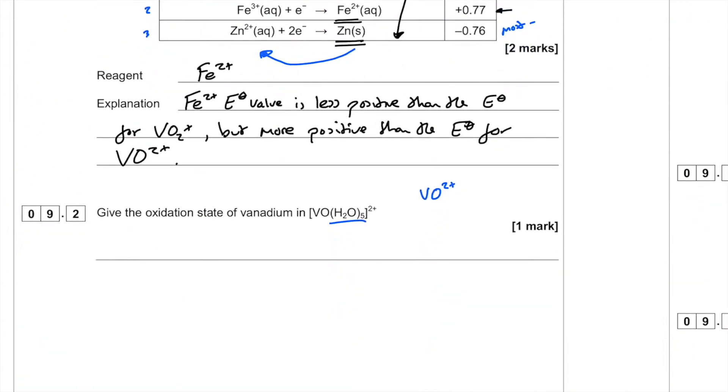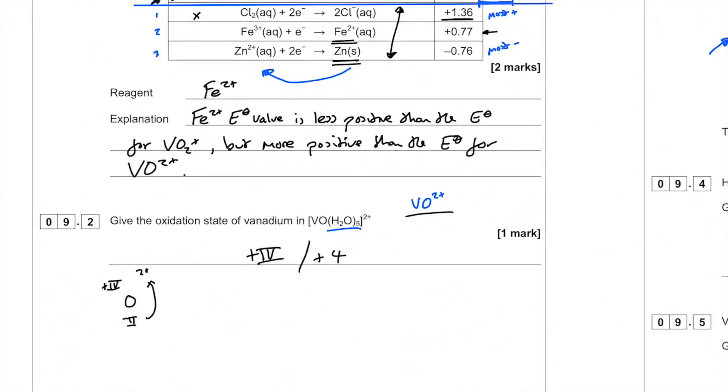Next up, give the oxidation state of vanadium in VO(H2O)5 2+. Now in the analysis I said we can eliminate that H2O from there completely because each H2O molecule, or ligand as they are here, has an overall oxidation state of 0. So there's no point muddying the waters with that. Just get rid of it. And so we end up with VO2+. Now each oxygen is -2. So to get to 2+, then of course what we need is +4. And that is the oxidation state of vanadium here. You can write +4, they will absolutely accept that. I just use Roman numerals because it keeps them very separate and distinct from charges.